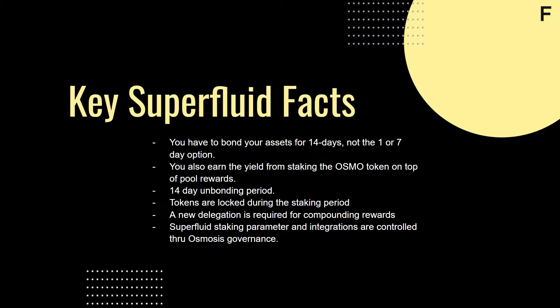To superfluid stake, you have to bond your assets for 14 days to unlock superfluid staking — not the one or seven day unbonding options. This is to match the unbonding time for staked Osmo.